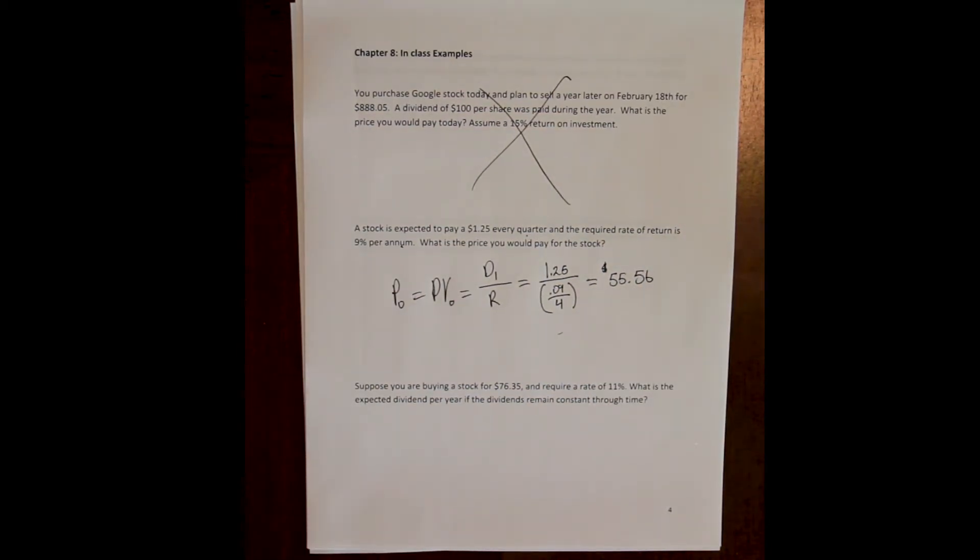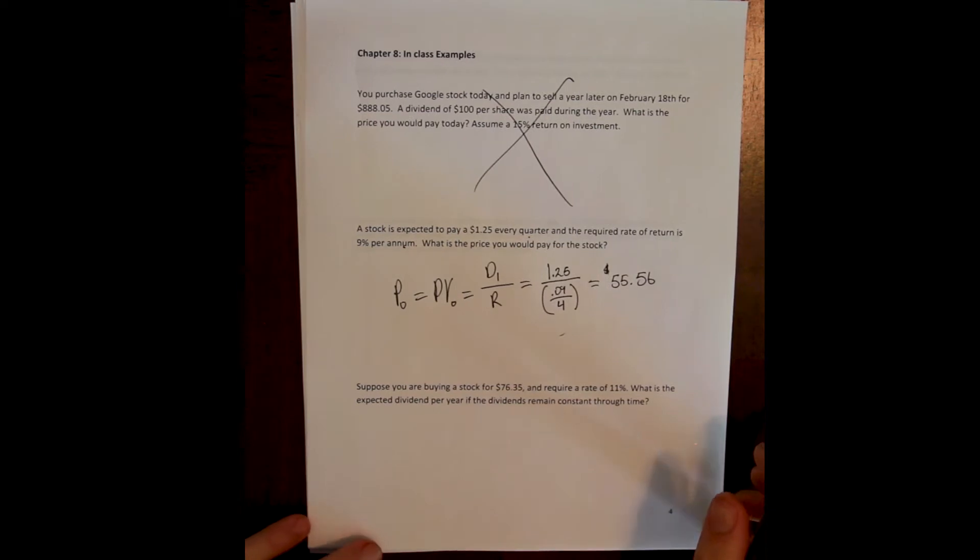The next example says: suppose you are buying a share of stock for $76.35 and require a rate of return of 11%. What is the expected dividend per year for the stock if we know that the dividends remain constant through time? This is just asking us to rearrange the formula and solve for a different piece.